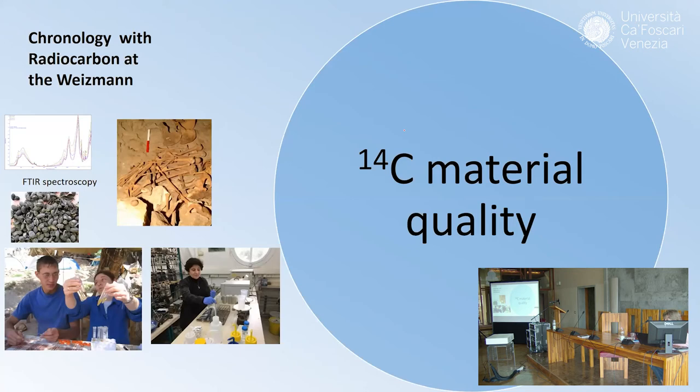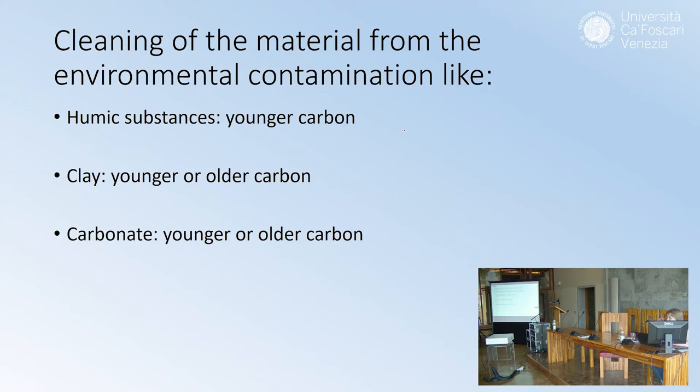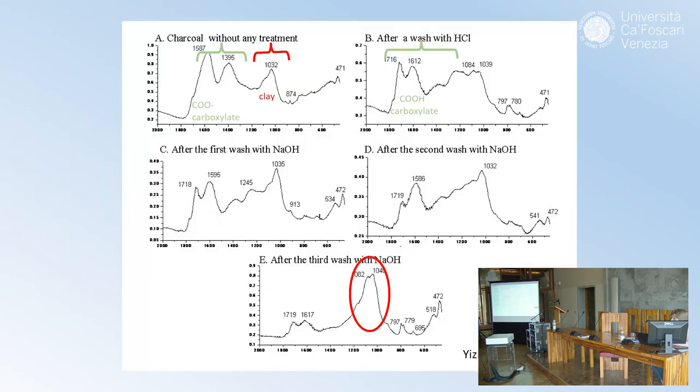Now, the material quality for C14. The fact that you see a bone doesn't mean that there is collagen, and the fact that you see a seed doesn't mean that you can measure it for C14, because diagenesis and changes through the thousands and thousands of years may completely destroy your initial C14, the material that contain your C14 for dating. You have to be aware that by staying in the sediments, you have humic substances that can carry younger carbon into your sample, clay that can be either younger or older in carbon, carbonate that can be younger or older. All these have carbon inside, and if you don't get rid of it and you are not left with the original material, then your data can be different.